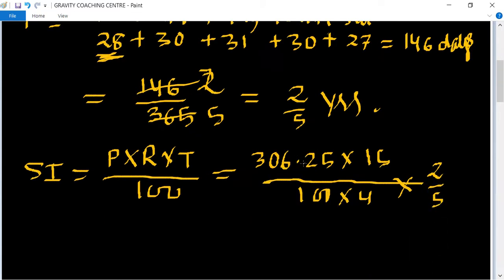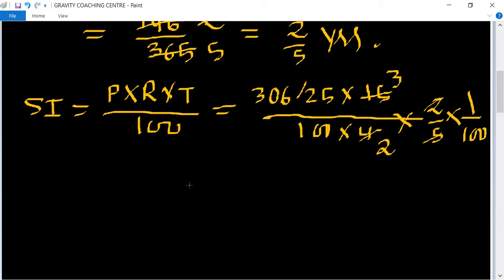So 1 upon 100. Table of 5: 5 3s is 15, and table of 2.